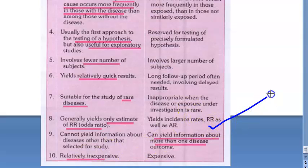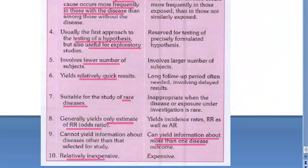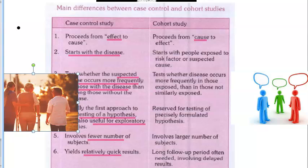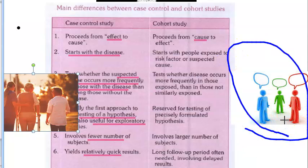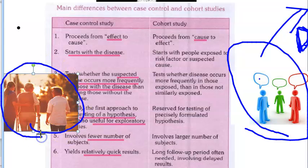In a cohort study, you track new incidences as they occur, so you get both relative risk and attributable risk. Relative risk is the incidence among the exposed divided by the incidence among the not exposed. A cohort is a group of people who are exposed to a risk factor you think may cause the disease, and you follow up to see if they get the disease. Both relative risk and attributable risk can be obtained.